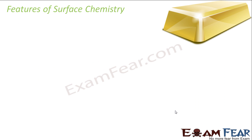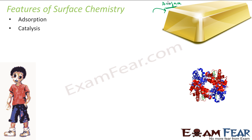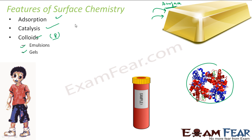Surface chemistry revolves around two — actually three — parts. The first is adsorption, which is when particles are adsorbed on the surface, and it is different from absorption. The second is catalysis, where the whole catalysis process also works on adsorption. The third is colloids — there are almost eight kinds of colloids, but we'll be studying only emulsion and gels. Blood is a good example of colloids. We'll talk about adsorption, catalysis, and colloids throughout this whole chapter.